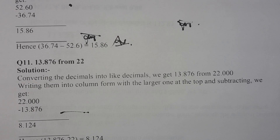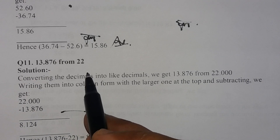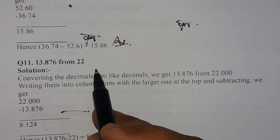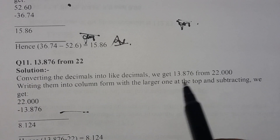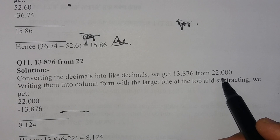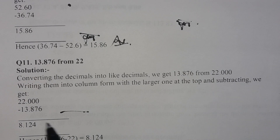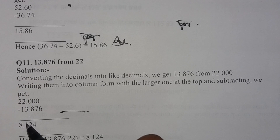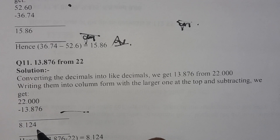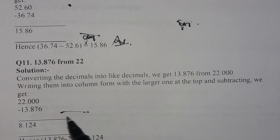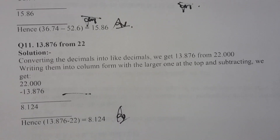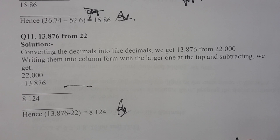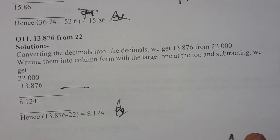In question number 11, we subtract 13.876 from 22. First we write them as like decimals: 13.876 stays as 13.876 and 22 becomes 22.000. When we subtract 22.000 minus 13.876, the answer will be 8.124.